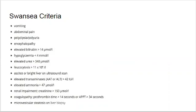These are the Swansea criteria for diagnosing acute fatty liver of pregnancy. You don't necessarily need to memorize all of these for CREOG, but it's worth having an idea of what the diagnostic criteria are. To diagnose acute fatty liver, you need to have six or more of these criteria met in the absence of any other liver pathology, so it's important to go through the differential before diagnosing acute fatty liver.